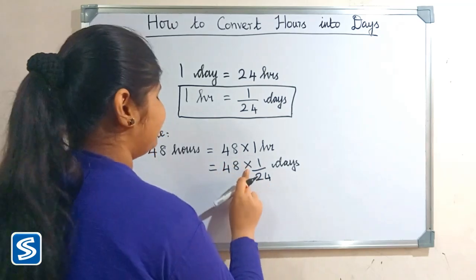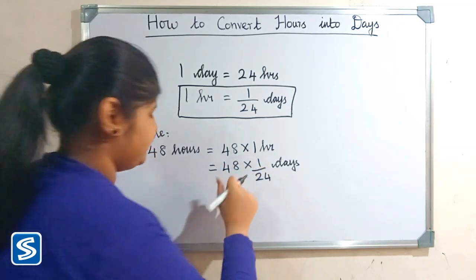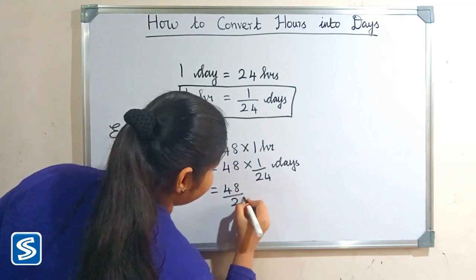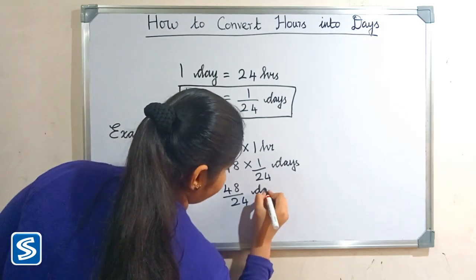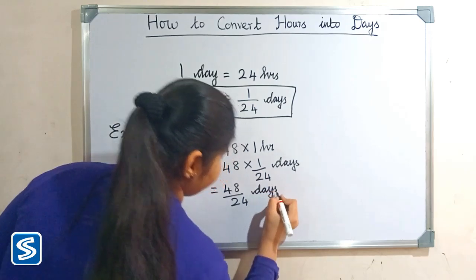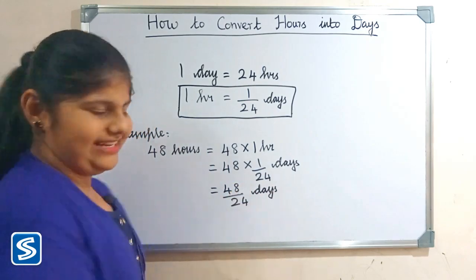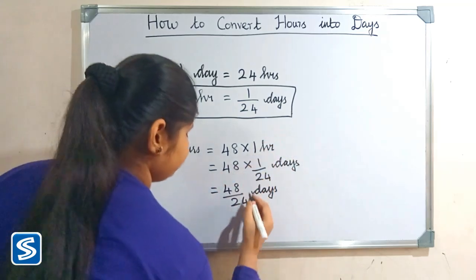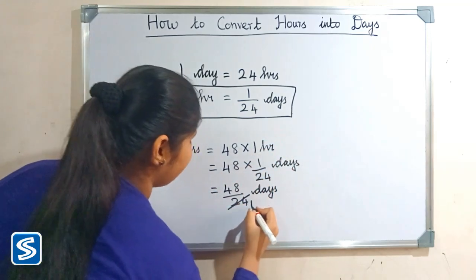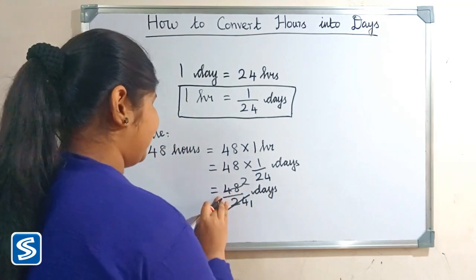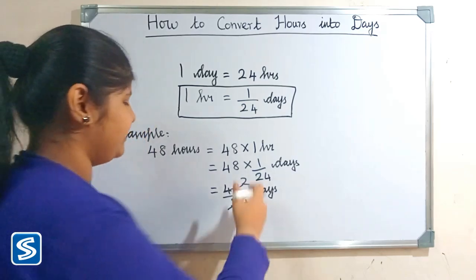So 48 multiply one will be 48, so 48 by 24 days. So now we have to divide 48 by 24. So 24 ones are 24, 24 twos are 48.